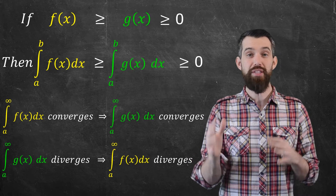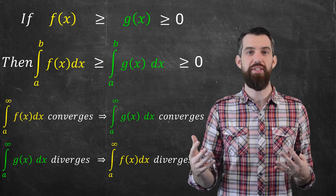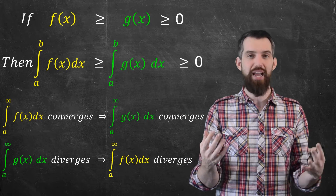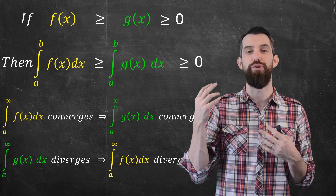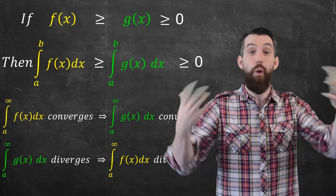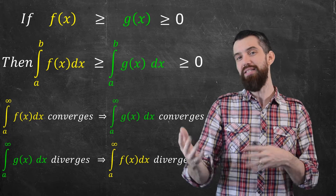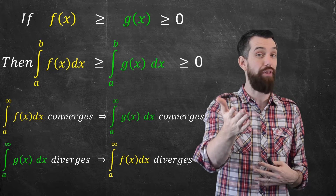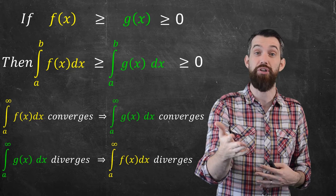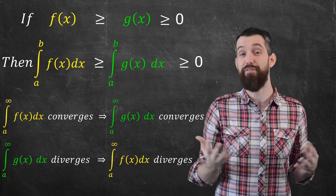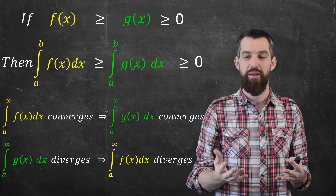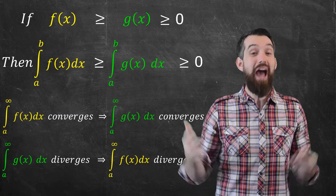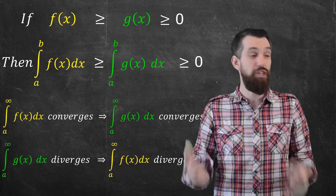Notice carefully that this result is about convergence versus divergence, but it doesn't tell me what it converges to. If the big one converges to L, it doesn't tell you what the small one converges to — something smaller than L and bigger than zero for sure, but the exact value we don't know. Now, if we're going to apply the comparison test, we have to have something to compare functions to.